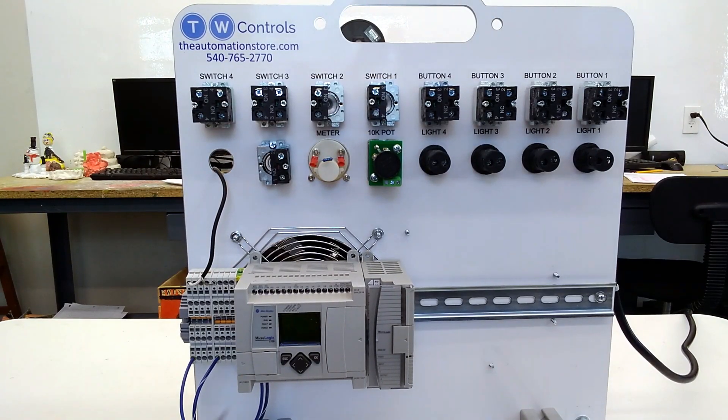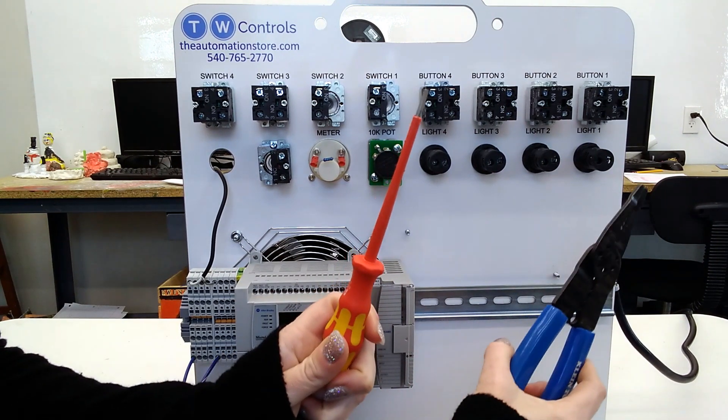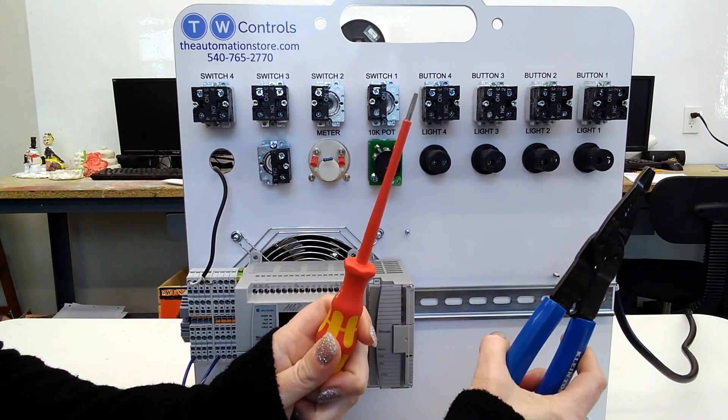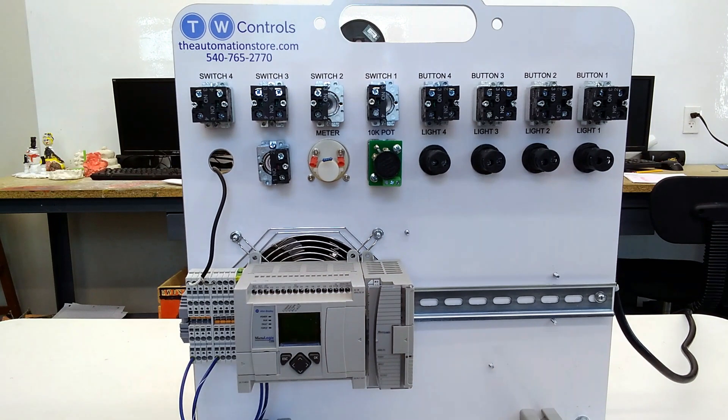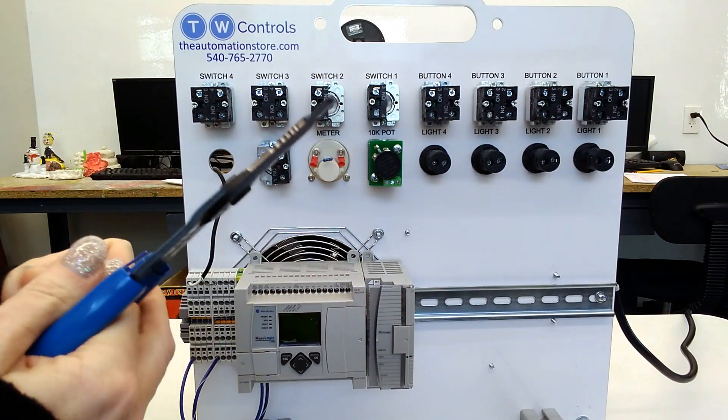For this lesson, you will need wire strippers and a terminal block screwdriver. In hindsight, we probably should have used a Phillips screwdriver on the lights and buttons. We'll put links to those in the description below.